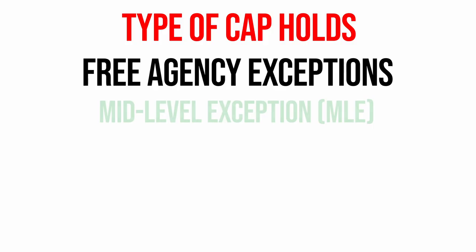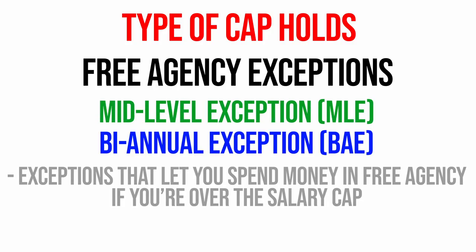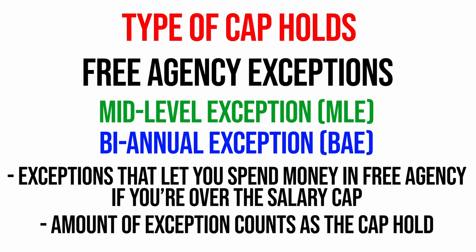The next cap hold is the mid-level exception and the biannual exception. Some teams will be so far over the cap that they don't get the full mid-level exception, or they might not have the biannual exception because you only get it once every other year — hence biannual. But it gets added to every team's cap holds, so even if you're 50 million under the cap you'd still have a cap hold for the mid-level exception until you choose to use cap space instead of it.